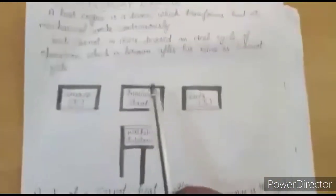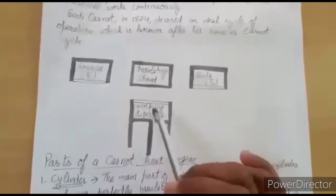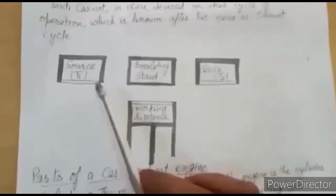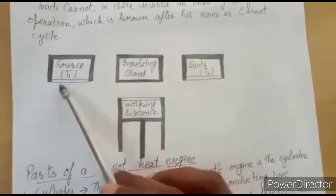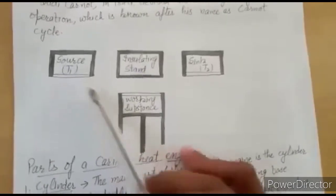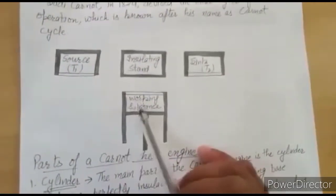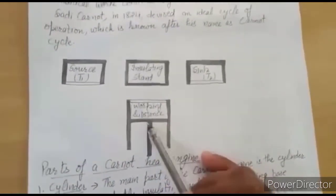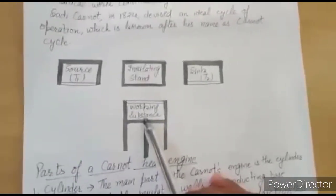The working of the Carnot heat engine includes basically four steps. In the first step, we place the working substance on the source. The base is conducting, so it gains heat from the source. Because heat is gained, expansion takes place — temperature increases and the substance expands.